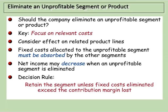Another type of short-term business decision is whether or not we need to eliminate an unprofitable product or segment of our business. A company should focus on relevant costs — not sunk costs or irrelevant costs, only those costs which vary between alternatives. We also have to consider the effect on our other product lines or segments.